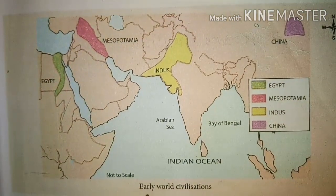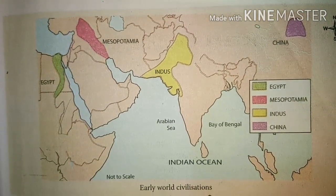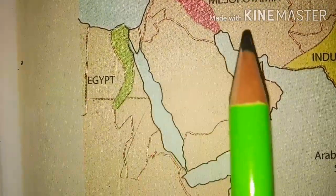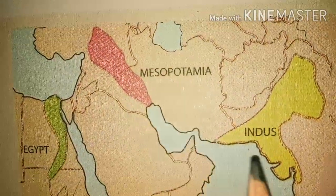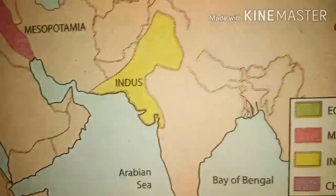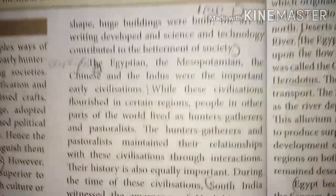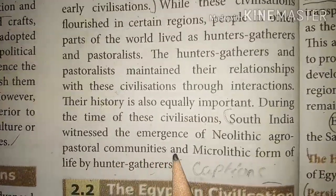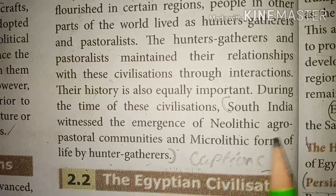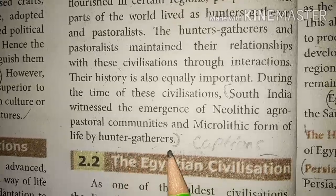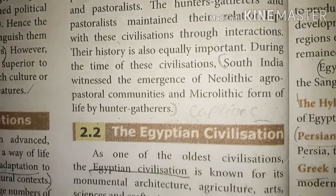Now look at this map. This shows the early world civilizations: Egyptian civilization in Africa, Mesopotamia civilization, Indus Valley civilization, and Chinese civilization. South India witnessed the emergence of Neolithic agro-pastoral communities and a microlithic form of life by hunter-gatherers.